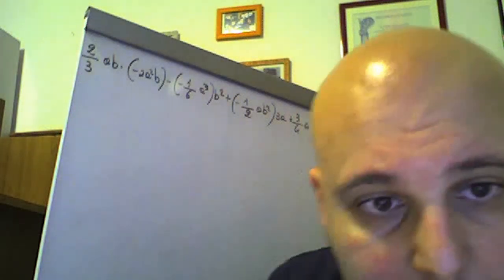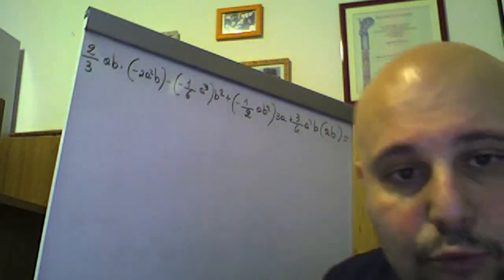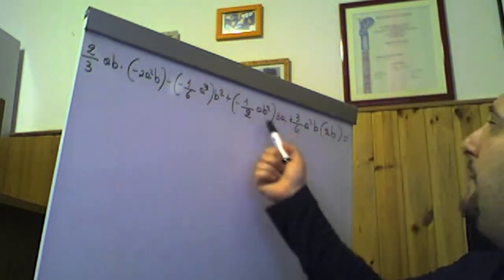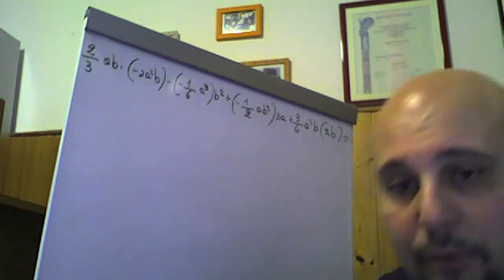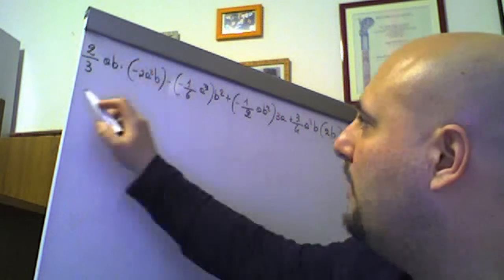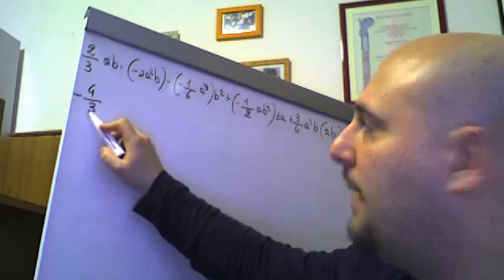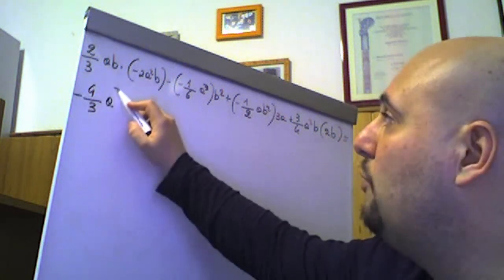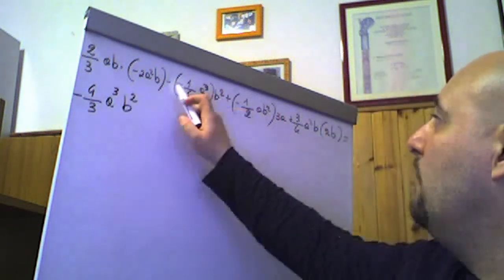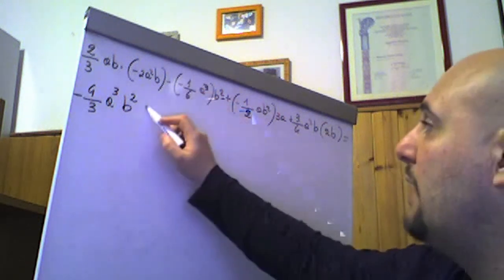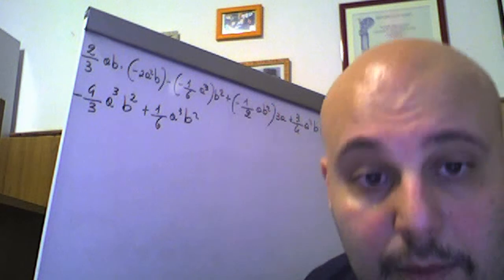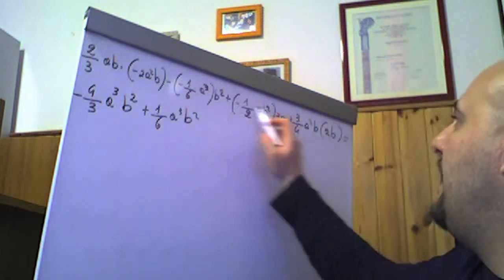Ancora un'espressione: 2/3 ab(−2a²b) − (−1/6 a³)(b²) + (−1/2 ab²)(3a) + 3/4 a²b(2b). Prima le moltiplicazioni, poi le somme. 2/3 × (−2) = −4/3, a × a² = a³, b × b = b² → −4/3 a³b². Poi meno × meno = più: 1/6 × 1 = 1/6, a³b² → +1/6 a³b². Poi più × meno × più = meno: 1/2 × 3 = 3/2, a × a = a², b² → −3/2 a²b².